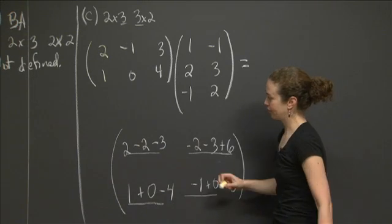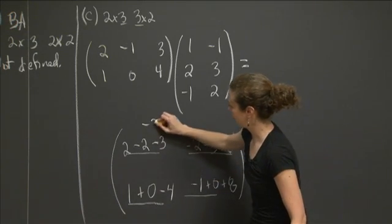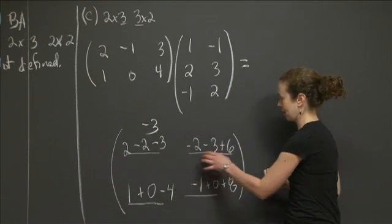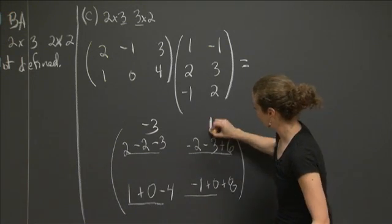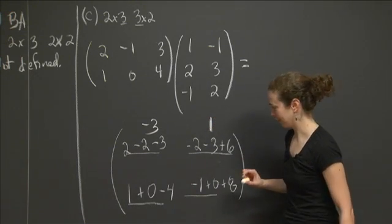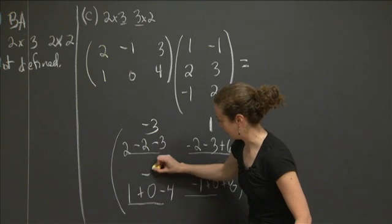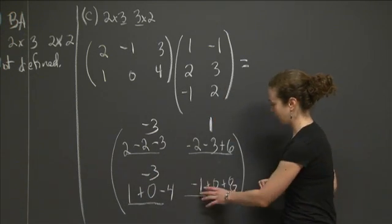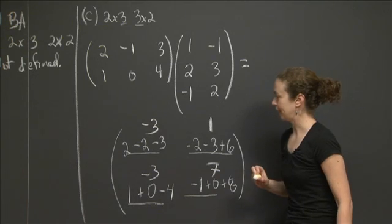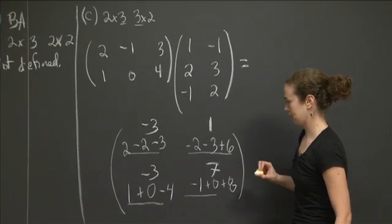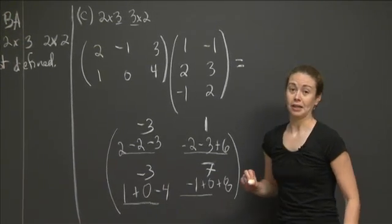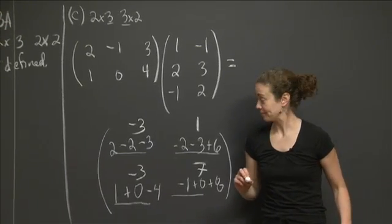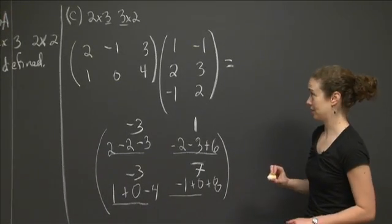So if I simplify these, it looks like in the first spot, I should get a negative 3. In the second spot, I should get a 1. This is just for you to check your answer. In the third spot, I get a negative 3. And then the fourth spot, I get a 7. So hopefully, I added correctly all throughout. I think I did. So I think we're good there. So that is the answer to C.